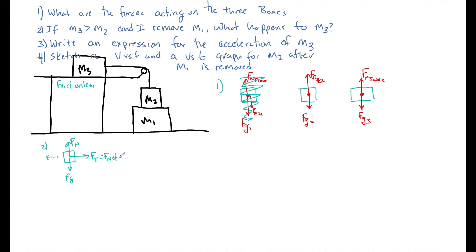FT is going to supply some sort of F net. And if there is some sort of F net, that means that the box must accelerate. So if M3 is much greater and I remove M1, what's going to happen to M3? It's going to accelerate in this direction right here.